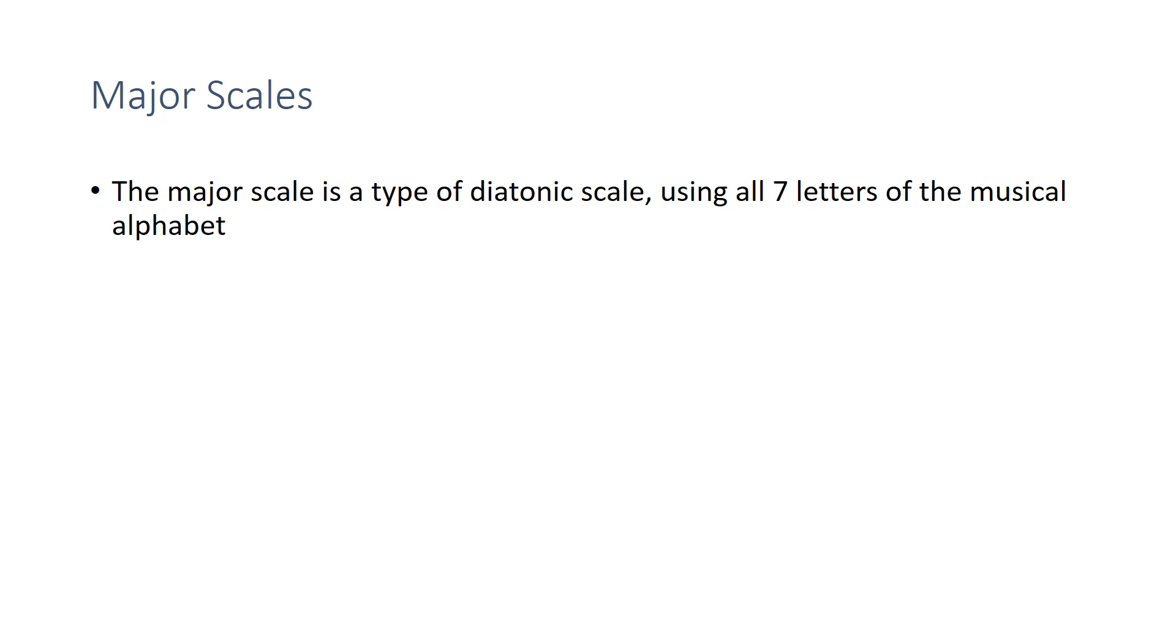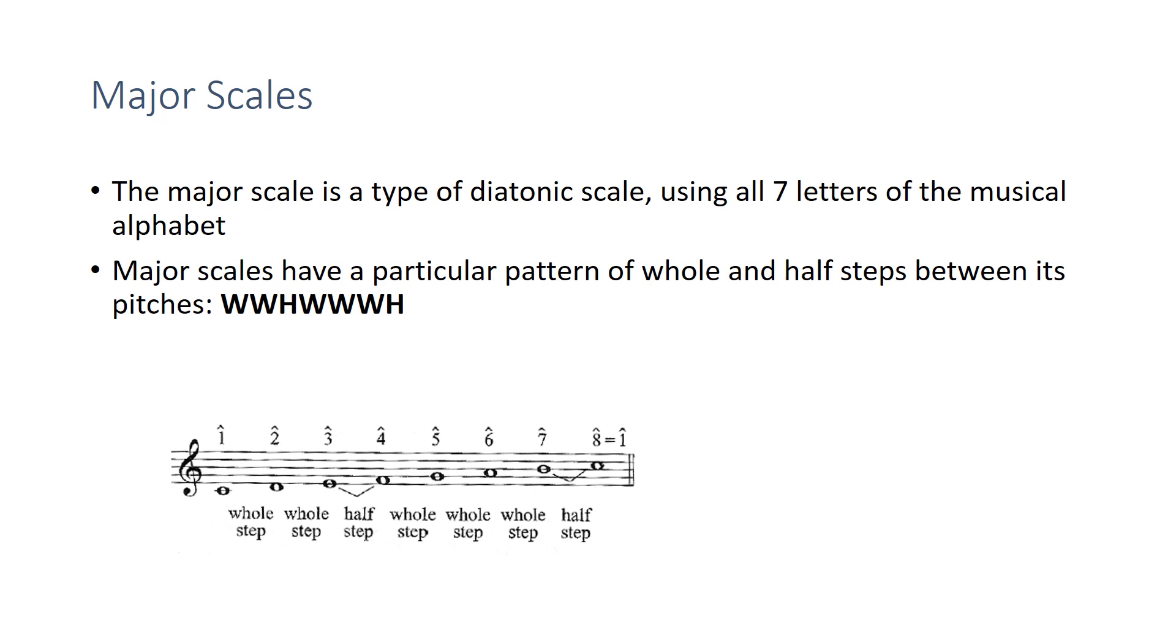Now we'll focus more specifically on the major scale. This is one of the types of diatonic scales that uses all seven letters from the musical alphabet. It has a particular pattern of whole and half steps that makes it sound like a major scale. And that pattern is whole, whole, half, whole, whole, whole, half. In other words, the half steps come between scale degrees three and four, and between scale degrees seven and eight. All of the other steps are whole steps. Any scale that has that pattern of whole and half steps will be a major scale. It just so happens that if you start on C and then ascend up the white keys on the piano, that's the pattern that occurs. So the C major scale is also known as the white key major scale.